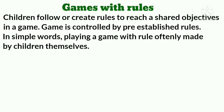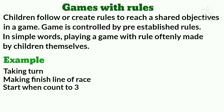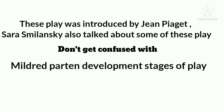The fifth type is games with rules. Children follow or create rules to reach a shared objective in games controlled by pre-established rules — in simple words, playing a game with rules, often made by the children themselves. Examples include taking turns, a finish line in a race, and starting when someone counts to three. It promotes language development and builds social skills. This play was introduced by Jean Piaget as well as Sarah Smilensky, who also described some of these play types. Do not get confused with Milder's pattern development theory of play, which we have already studied.